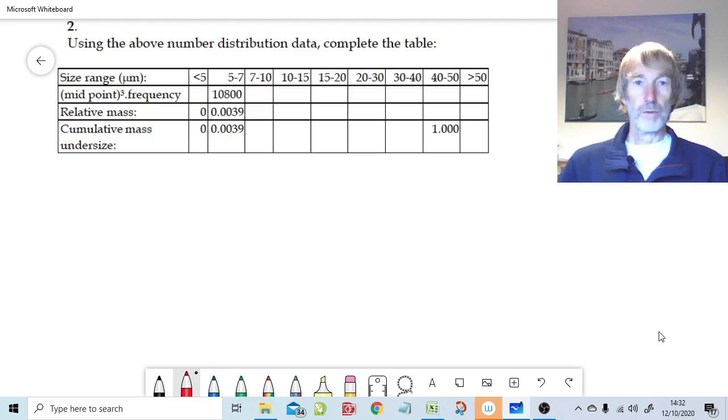Welcome to Question 2 from Chapter 2 of Fundamentals of Particle Technology. This question is all about converting data that's been obtained in numbers into a mass distribution. So what we have here on the board is Question 2 from Fundamentals of Particle Technology book.